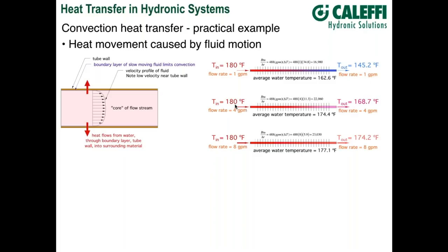Now take the same fin tube, same supply water temperature, but boost the flow rate to 4 GPM. The outlet temperature actually increases — the delta T has decreased, but remember delta T is only one factor in the rate of heat transfer; flow rate is the other. The average water temperature based on 180°F in and 168.7°F out goes up to 174°F. Increasing average water temperature in any heat emitter increases its heat output. We've gone from roughly 17,000 to roughly 22,000 BTUs per hour simply by increasing the flow rate — no change in water temperature, just a thinner boundary layer and better heat transfer.